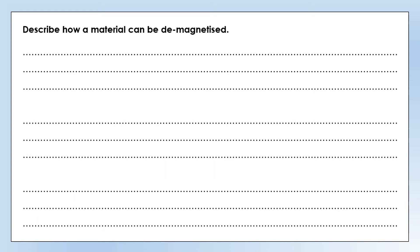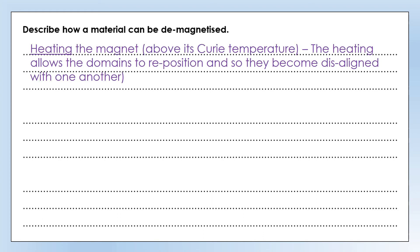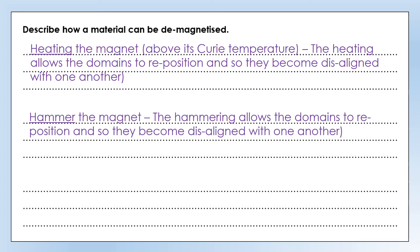Now we can look at the exact opposite — how do we demagnetize a material? One way is by heating it, because that allows the domains to reposition and become disaligned with one another. The temperature at which this happens is known as the Curie temperature. The second way is again getting out a hammer, but this time not in a magnetic field — we just hammer the magnet, or dropping it on the floor has a very similar effect, and it allows the domains to become randomly scrambled.